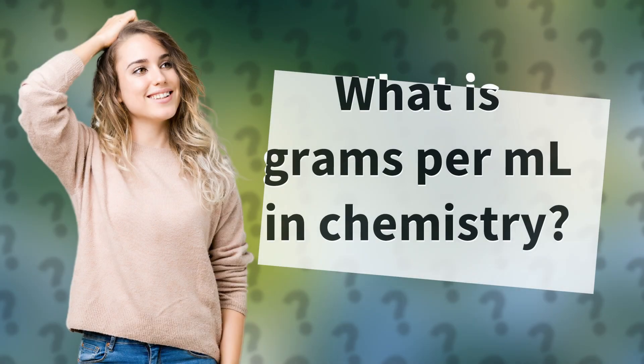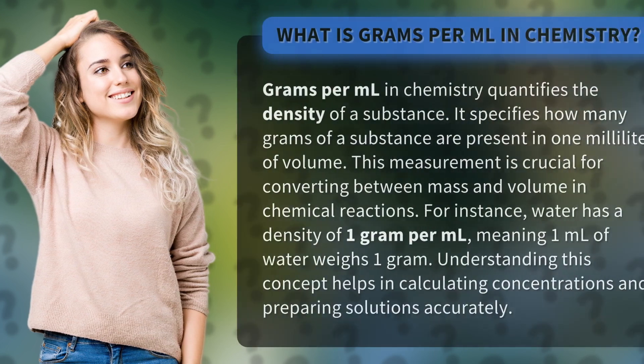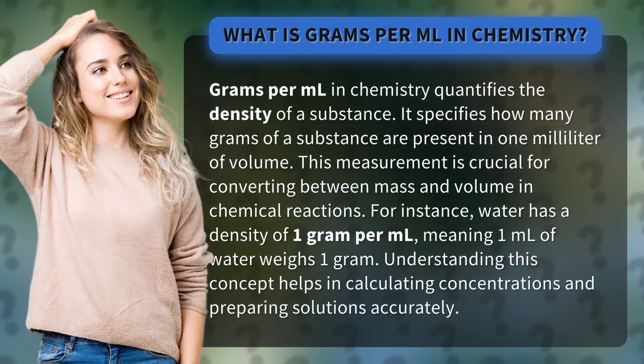What is grams per milliliter in chemistry? Grams per milliliter in chemistry quantifies the density of a substance. It specifies how many grams of a substance are present in one milliliter of volume. This measurement is crucial for converting between mass and volume in chemical reactions.